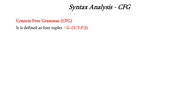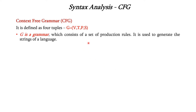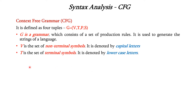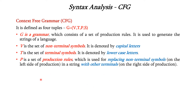Now let us see about context-free grammar. It is defined as 4-tuples: G = (V, T, P, S). Here G is the grammar which consists of a set of production rules used to generate the strings of a language. V is the set of non-terminals, denoted by capital letters. T is the set of terminals, denoted by lowercase letters. P is the set of production rules, used for replacing the non-terminals on the left side of the production with terminals on the right side.